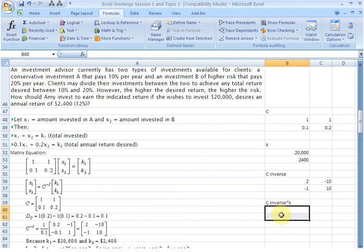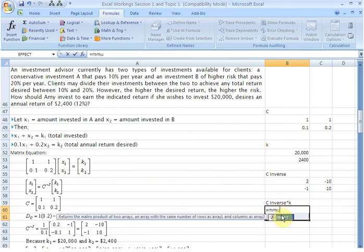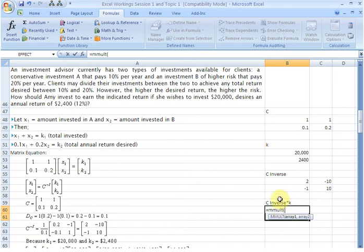A 2 by 1 space, and inside we write the MMULT function. The first array is going to be C inverse, which is this, comma, and the second array is going to be the K vector, which is this. Close brackets and then hit the Ctrl, Shift, and Enter keys simultaneously.